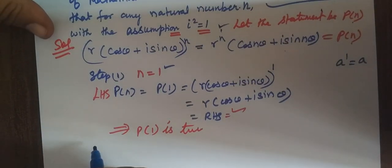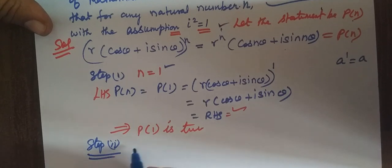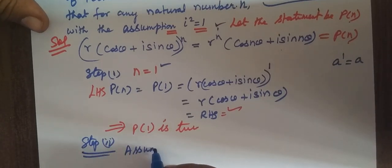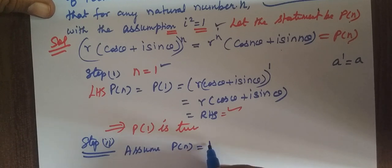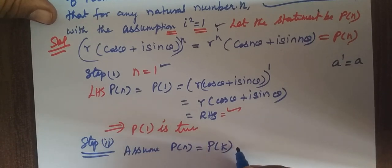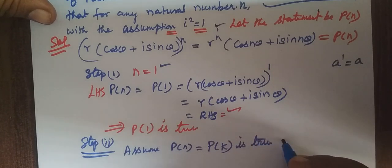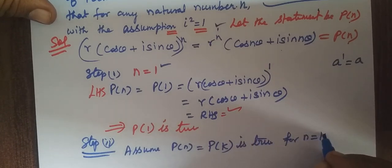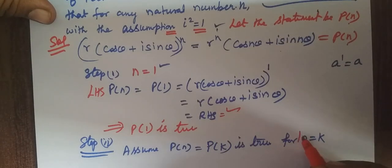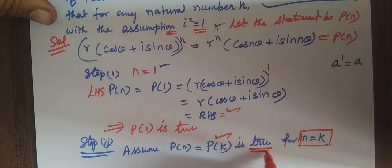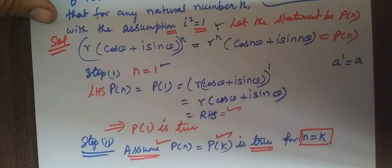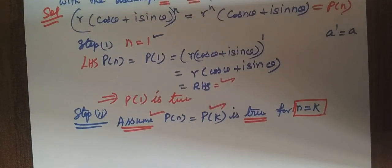Step 2: Assume P of k is true for n equal to k. That is, P of k is true, meaning r bracket cos theta plus i sine theta whole power k equals r power k bracket cos k theta plus i sine k theta.